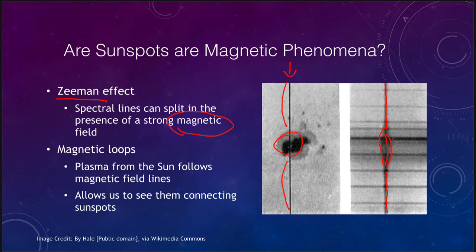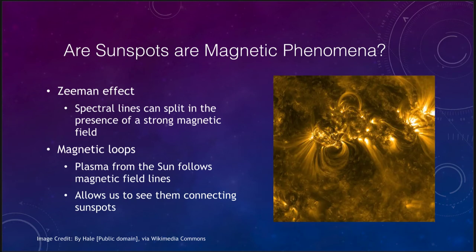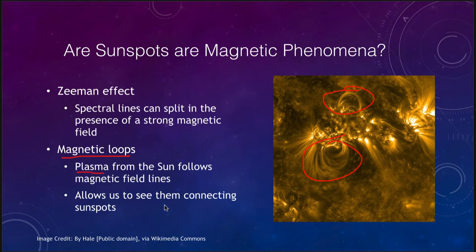That's not the only way we can identify sunspots as magnetic — we can also look at the magnetic loops formed by plasma flowing out from the sun. We can see little loops, which look much like the field lines we get for a bar magnet with iron filings here on Earth. The magnetic field lines themselves are invisible, but the plasma follows those lines, allowing us to see how they connect sunspots together. When you see little groupings like this, you can expect a sunspot group on either edge with the magnetic field line looping in between them.